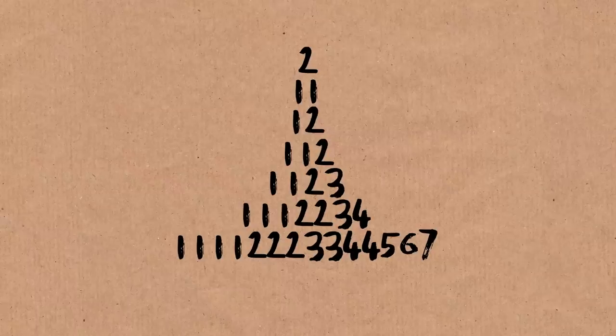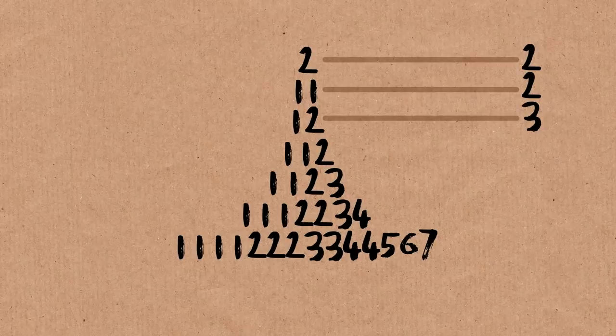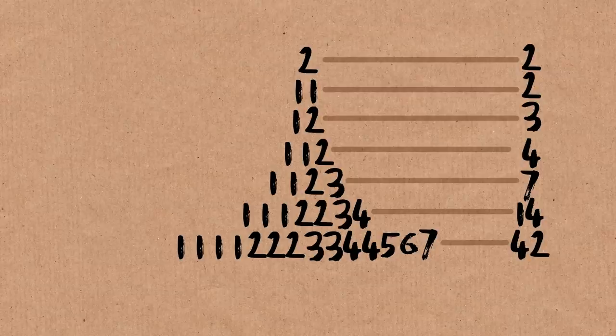And now you add up the numbers in each row. So here we get a two. One plus one is two, one plus two is three, and we get four. So these numbers are the sums of the numbers in the rows.